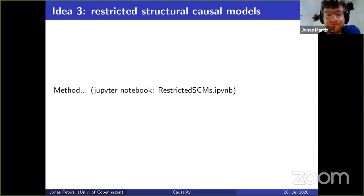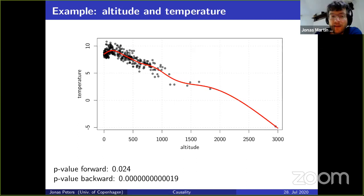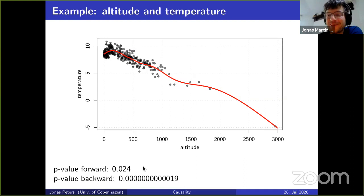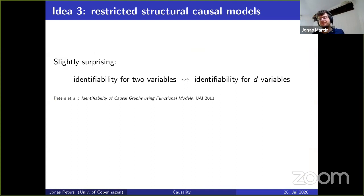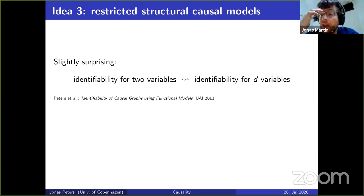The altitude-temperature example illustrates this: regressing temperature on altitude gives a very reasonable model with independent-looking residuals, while regressing altitude on temperature looks very unreasonable. The two-variable case is really the hard case — you can prove that whenever you have identifiability in the two-variable case, this transfers to identifiability in the multivariate case. So identifiability of the two-variable case is the hardest challenge. An additional interesting point is that you don't need the faithfulness assumption here, though additive noise remains a very strong assumption.